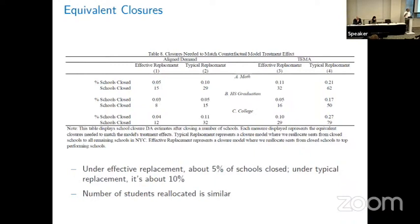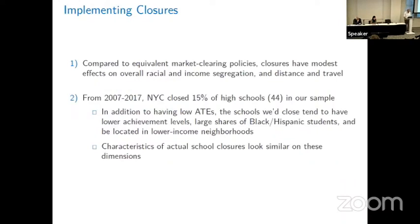Aligned demand is a hypothetical where people rank schools by effectiveness — I've never seen anything close to that implemented in the field. The TEMA, treatment-effect-maximizing allocation, requires more closures, but that's truly an idealized first best. Compared to equivalent market clearing policies, closures have more modest effects on overall racial and income segregation, and relatively modest effects on distance and travel. Even if we target improving outcomes for low baseline math kids or minority kids, closing schools does better — those kids are disproportionately at the schools we'd recommend closing.